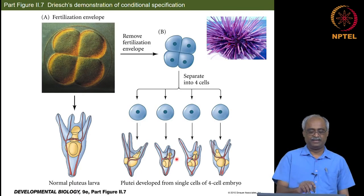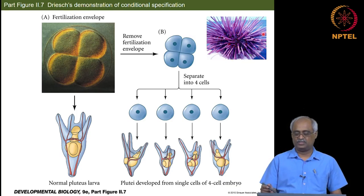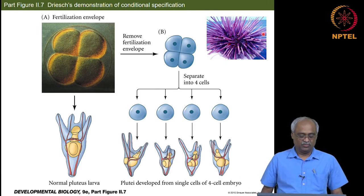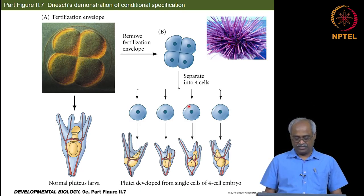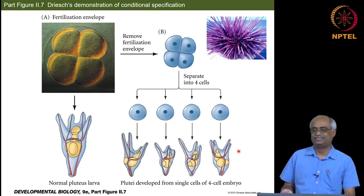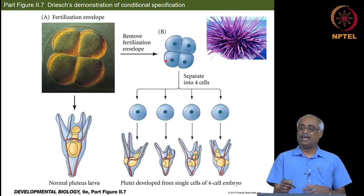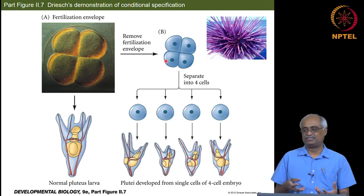Enter Driesch: he worked with sea urchins, which were abundant in the coastal area of France where he lived. He took the embryos, separated them into individual cells, and was surprised to find that each one developed into a complete larval stage — as if each cell had the information to make all the missing parts. This was already shaking the concept of autonomous specification.